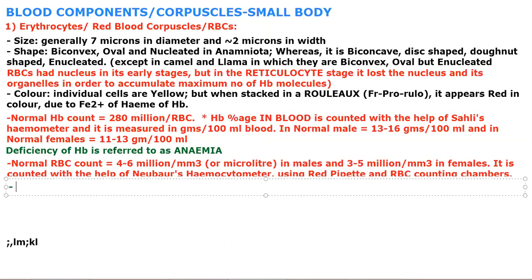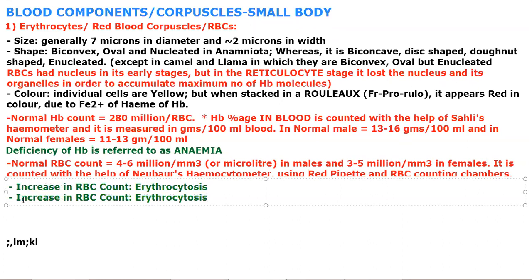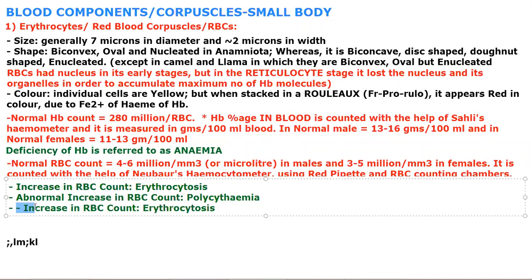Now for abnormal counts: number one is increase in RBC count. This is called erythrocytosis — an abnormal increase in RBC count is termed erythrocytosis.